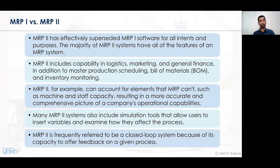The MRP2 system software also includes simulations — for instance, simulating increases or decreases in price levels, changes in raw material availability, changes in the assembly line, and changes in management functions or strategic decision making. The software shows how changes in one decision can impact other factors. MRP2 is also referred to as a closed-loop system because it monitors feedback on a given process, producing outputs based only on the commands given.